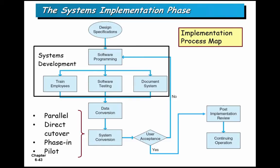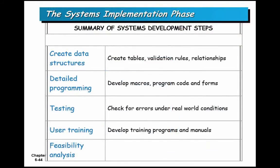The second component of implementation is conversion, which has two parts. First, data conversion: most systems today replace older systems with lots of existing data, so you need to convert data from old formats to new formats. Second, systems conversion: figuring out how to get people over into the new system. The steps in systems development include creating the database, doing detailed programming, testing, training, and so on.